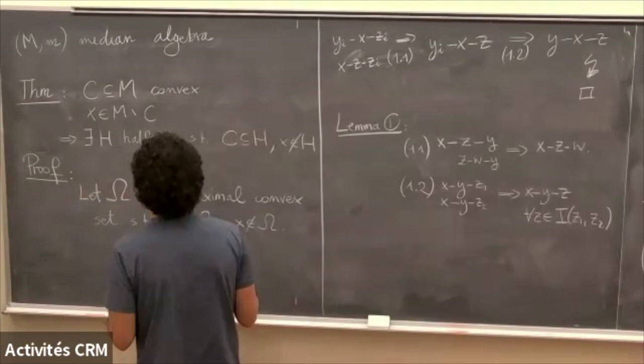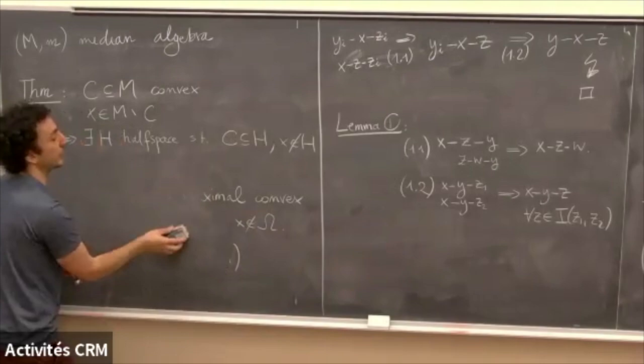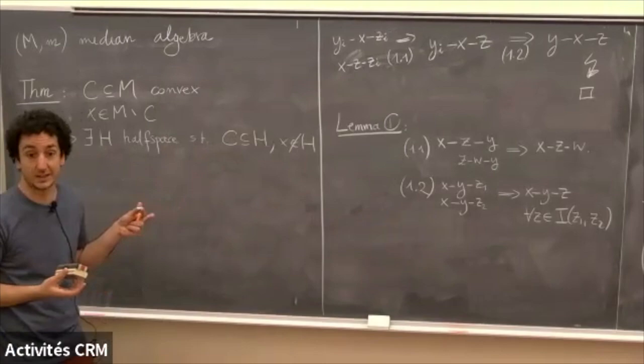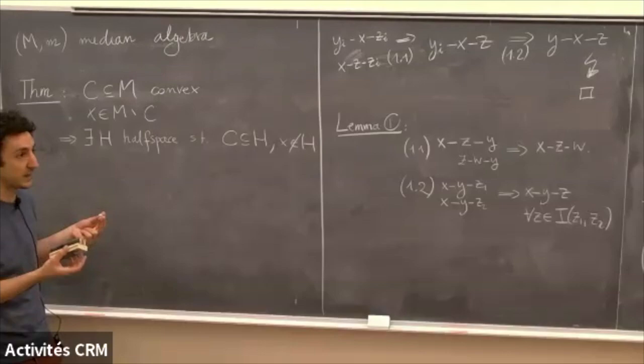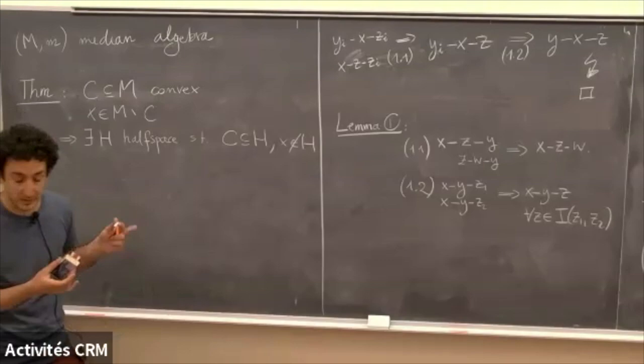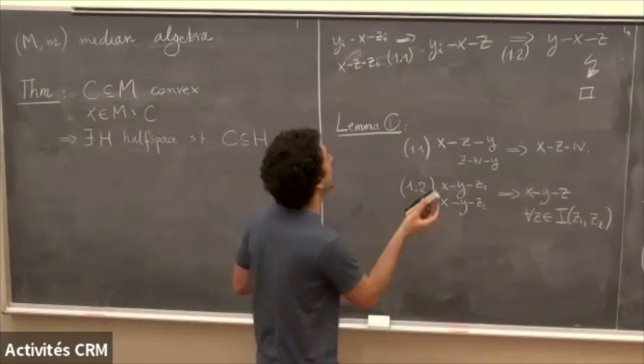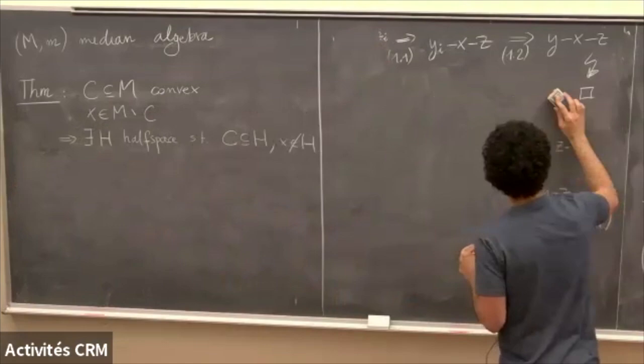Now something more philosophical: to what extent do half spaces determine the median algebra? We saw this an hour ago for cube complexes — you can reconstruct a CAT(0) cube complex just from its half space poset. Can you do this for a median space or median algebra? It turns out it's a bit more complicated, but the general idea is there.